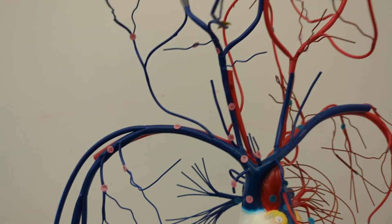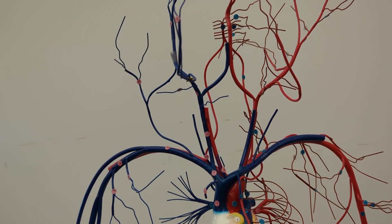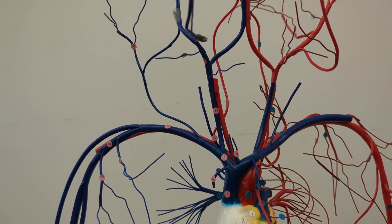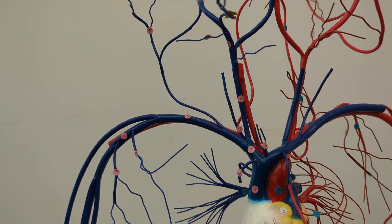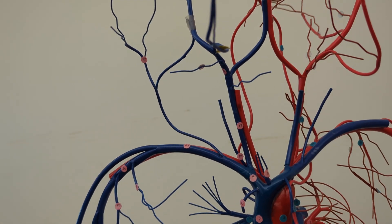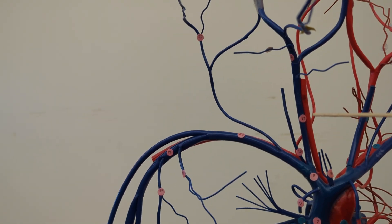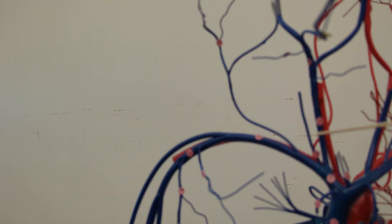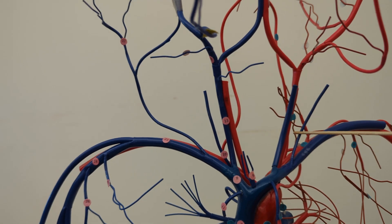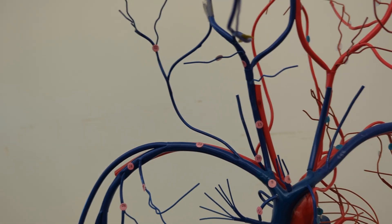Knowing the blood flow is so important and helpful when trying to figure out what these veins and arteries are. You really want to see which blood vessels are connected, where they go to, where they come from, and any landmarks they are next to. For example, if you can see the internal jugular vein, you can usually see the common carotid artery right next to it.